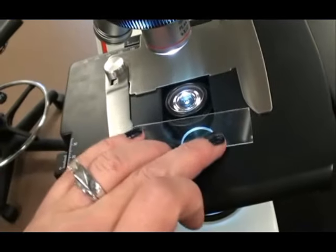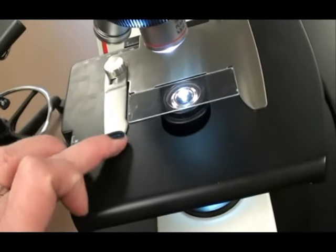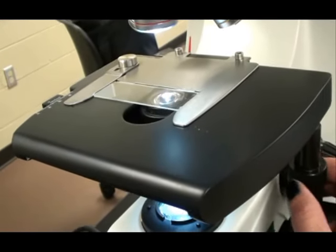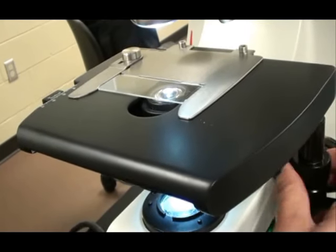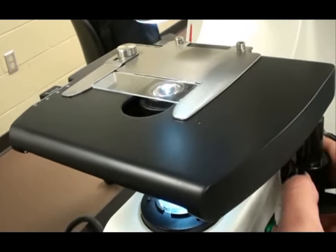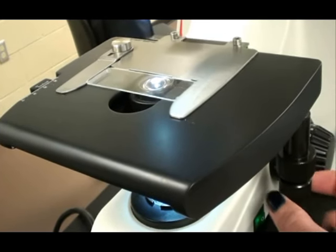A mechanical stage is a very handy feature to have on your scope. You can place your slide into the slide holder and then adjust the position of your slide using the coaxial adjustment knobs, usually hanging off the side of the stage. This way you can center your specimen very easily.